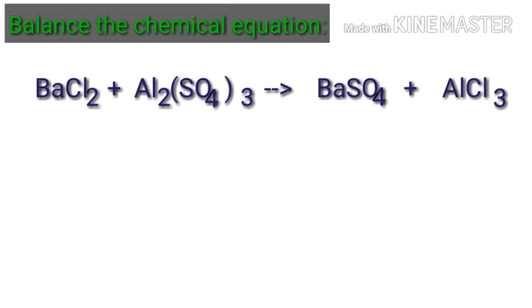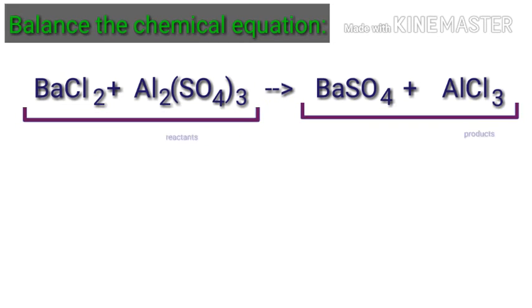Balance the chemical equation. Let's take a look at this equation representing a chemical reaction. In this equation, the reactants are barium chloride and aluminum sulfate, and the products are barium sulfate and aluminum chloride.